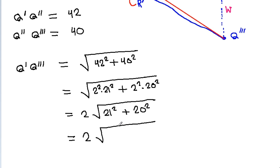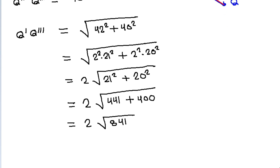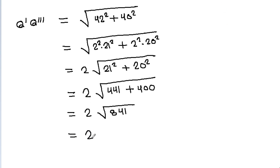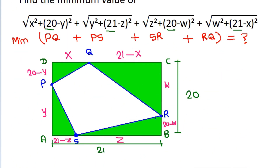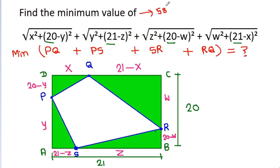And it is 2 times square root of (441 + 400), which is 2 times square root of 841, and square root of 841 is 29. So it is 2 × 29 = 58. That means the minimum value would be equal to 58.